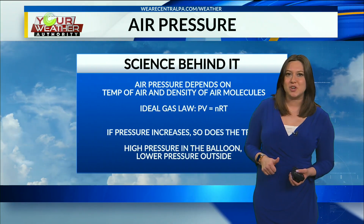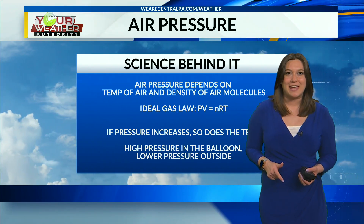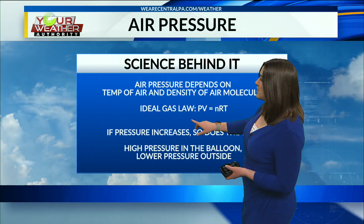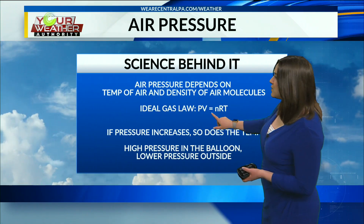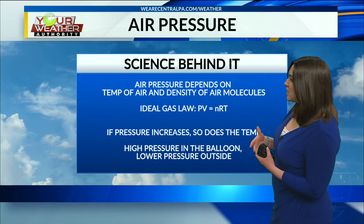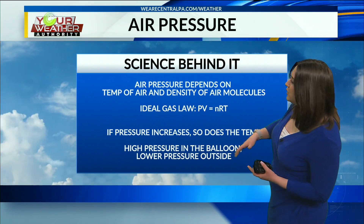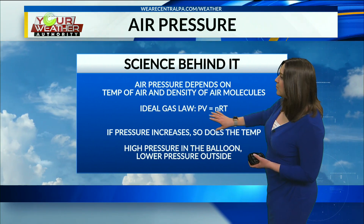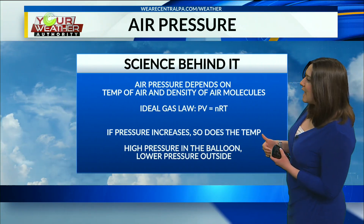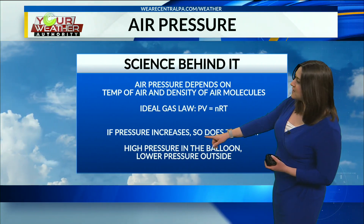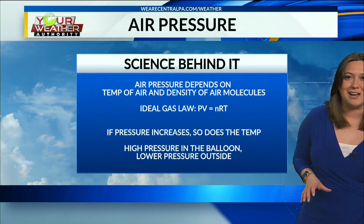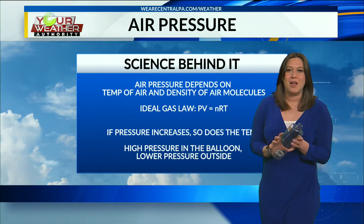Air pressure depends on the temperature of the air and the density of the air molecules. In meteorology we use the ideal gas law, which is PV equals NRT. We use this equation to calculate air pressure. When you plug in pressure, volume, the constant, and temperature — if pressure increases, so does the temperature.